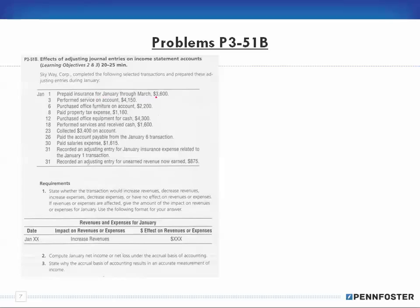Transaction one: prepaid insurance for January through March was $3,600. We're receiving cash for prepaid insurance, so the entry is debit prepaid insurance and credit cash. Because only asset accounts are affected, there is no effect on revenues or expenses for January 1st.